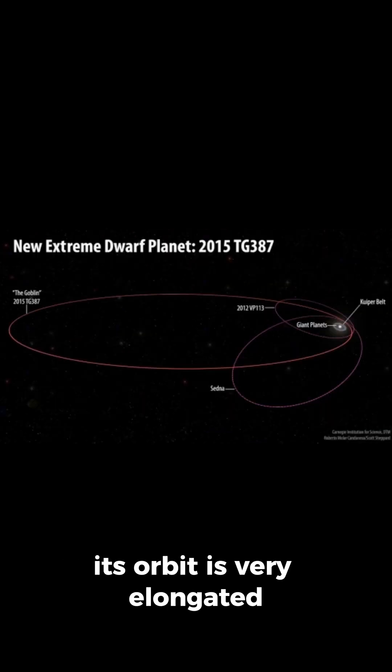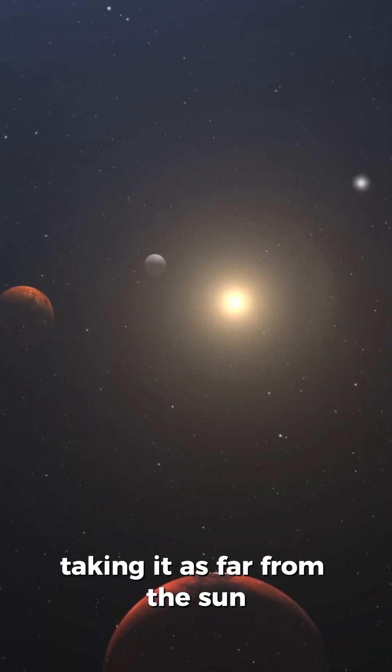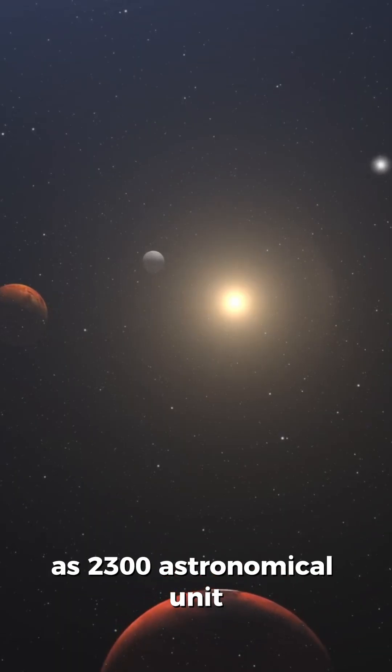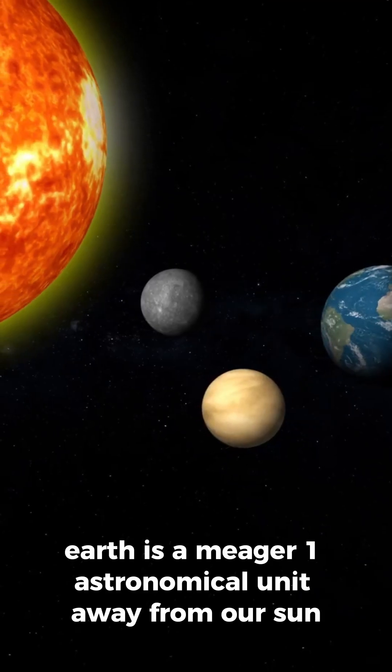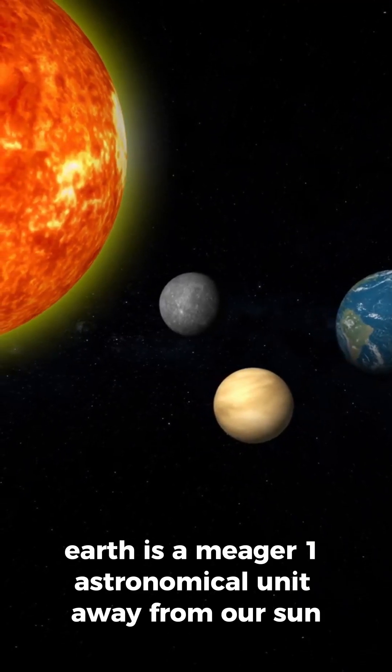Its orbit is very elongated, never bringing it closer to the sun than Neptune. However, it takes it as far from the sun as 2,300 astronomical units. For comparison, Earth is a meager 1 astronomical unit away from our sun.